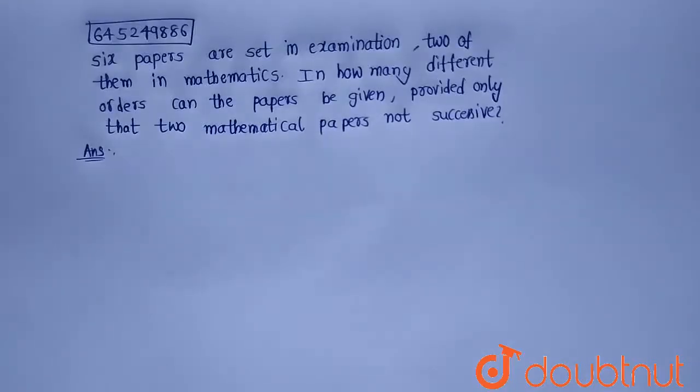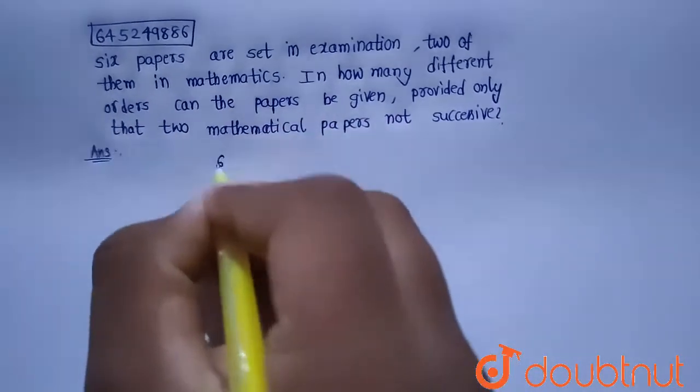Six papers are set in examination, two of them are mathematics. In how many different orders can the papers be given, provided only that two mathematical papers are not successive? So given, there are six papers total and there are two mathematical papers.